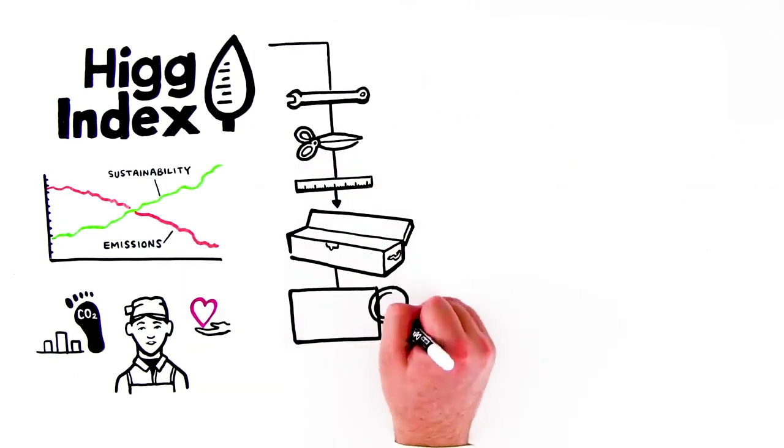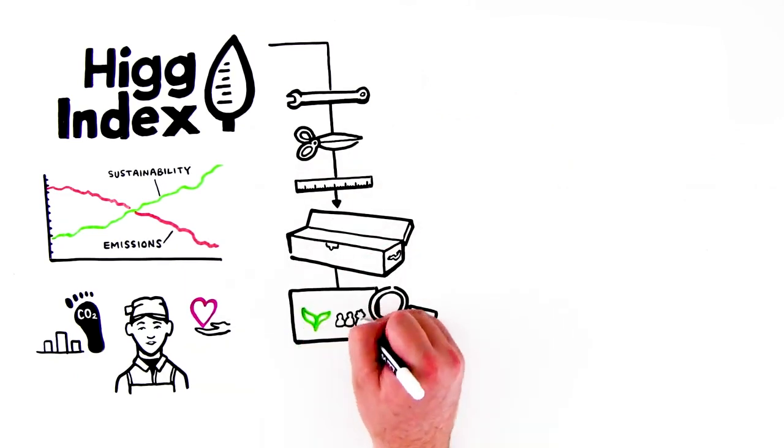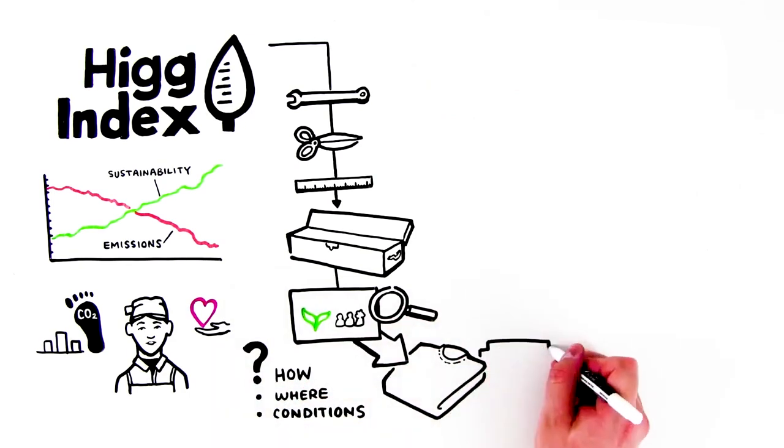The HIG Index measures the environmental and social impacts of how, where, and under what conditions products are made, and the companies making them.